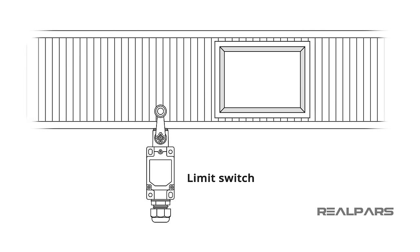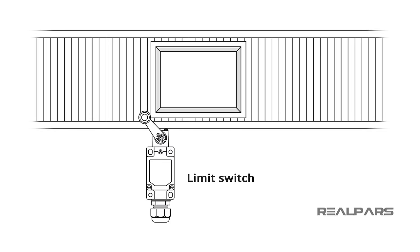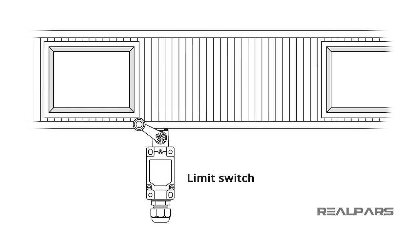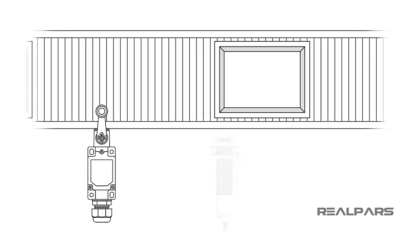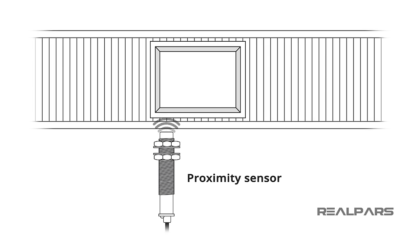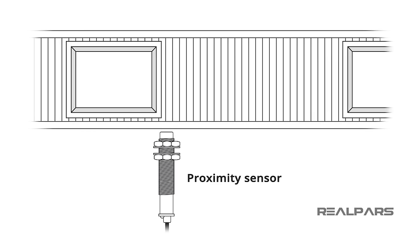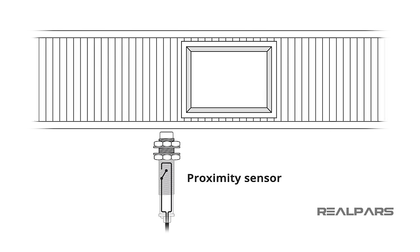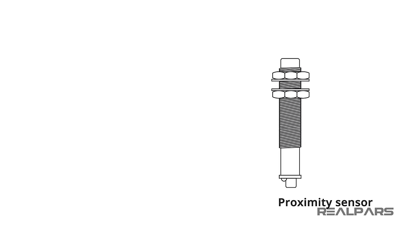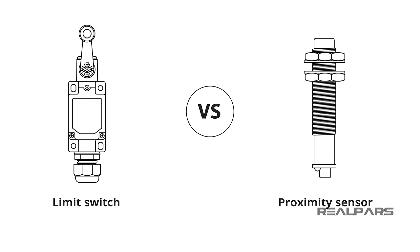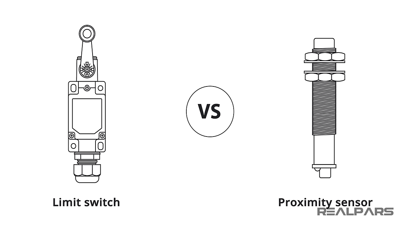Limit switches are slowly starting to disappear from many industrial applications. They are being replaced by proximity sensors. Unlike a limit switch, a proximity sensor has no mechanical moving parts. A proximity sensor performs the switching action with electronic switches. Limit switches will not completely disappear anytime soon, as they outshine their proximity switch counterpart in their ruggedness and reliable operation in difficult environments. Generally speaking, limit switches are capable of handling much higher current values than proximity sensors.